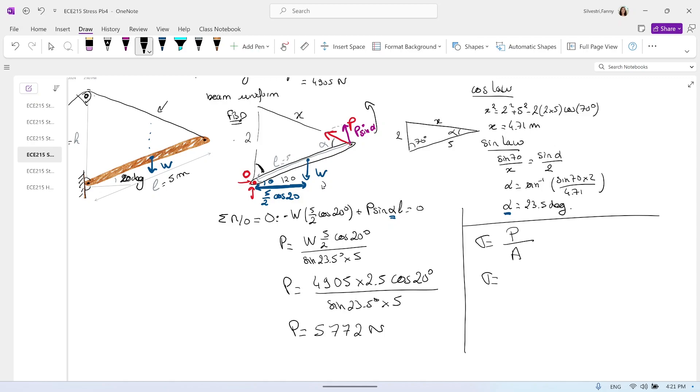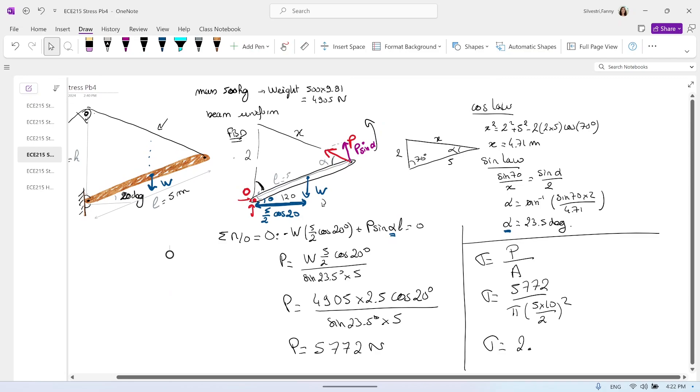So sigma equal 5,772 divided by pi times the 5 centimeters. So 5 times 10 and divided by 2 because this is the radius square. When we get that, we get 2.9. So we get 2.9 megapascal.